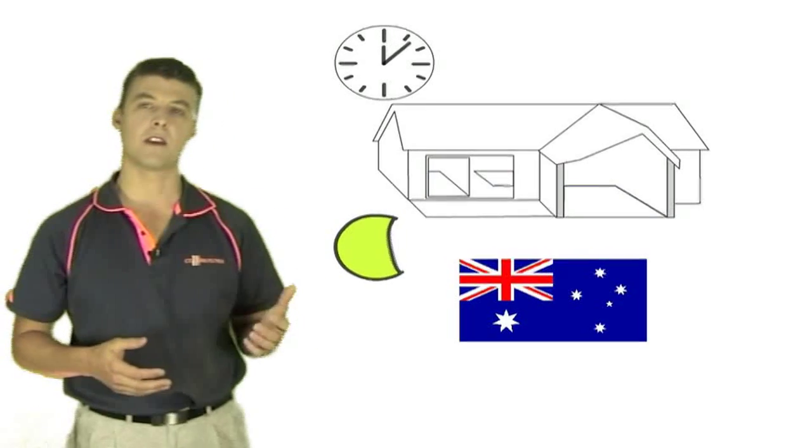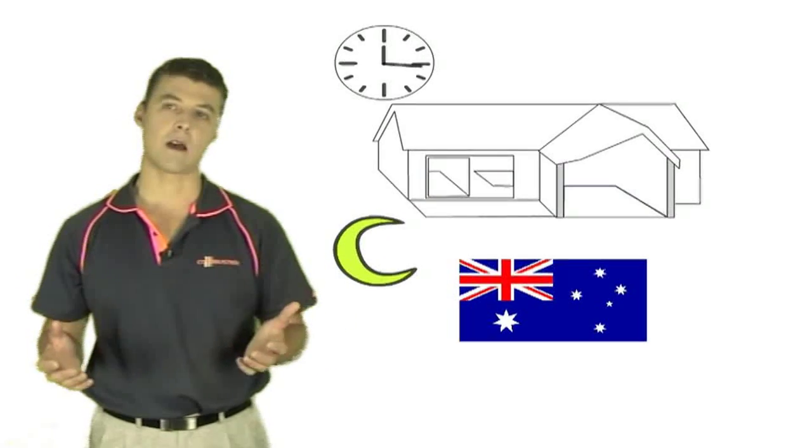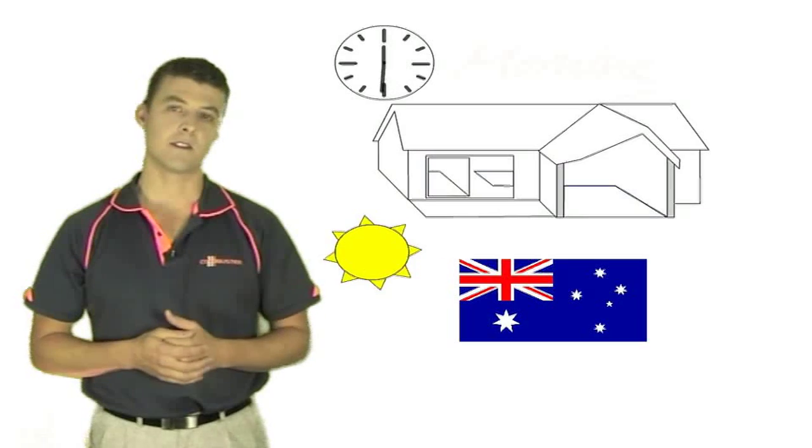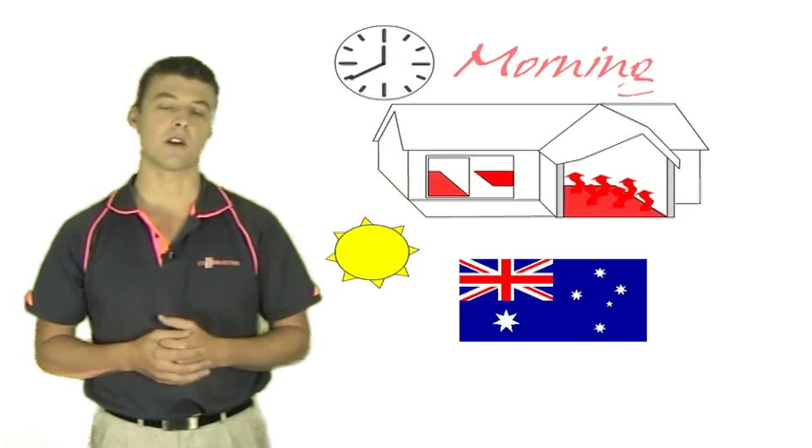Cold Buster will use less energy to heat a room than an in-screed or an in-slab system for three reasons. Firstly, because it is zoned so only occupied rooms need to be switched on.